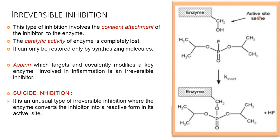Irreversible inhibition involves the covalent attachment of the inhibitor to the enzyme, completely losing catalytic activity, which can only be restored by synthesizing new enzyme. An example is aspirin, which covalently modifies a key enzyme involved in inflammation. Suicide inhibition is an unusual type of irreversible inhibition where the enzyme converts the inhibitor into a reactive form within its active site.